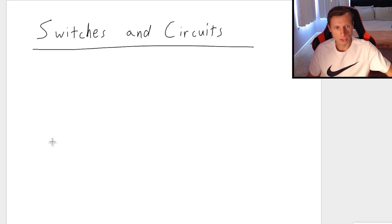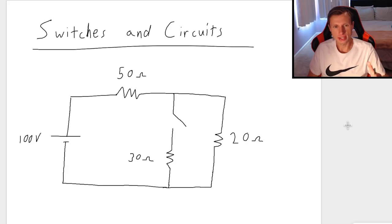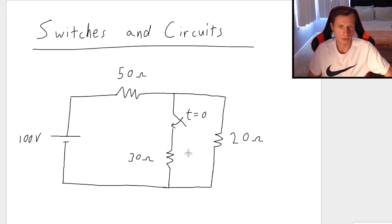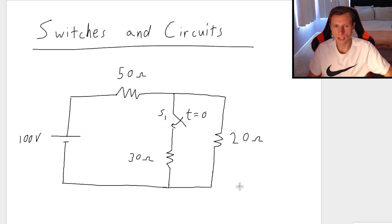So let me draw a quick circuit to show you what I'm talking about. We'll have a circuit that looks something like this. You'll notice there's a switch right here that can connect the middle path. Usually they say something like at time t equals zero, or they'll label this switch s sub one, for instance. And that's just notation, so don't get too hung up on that.